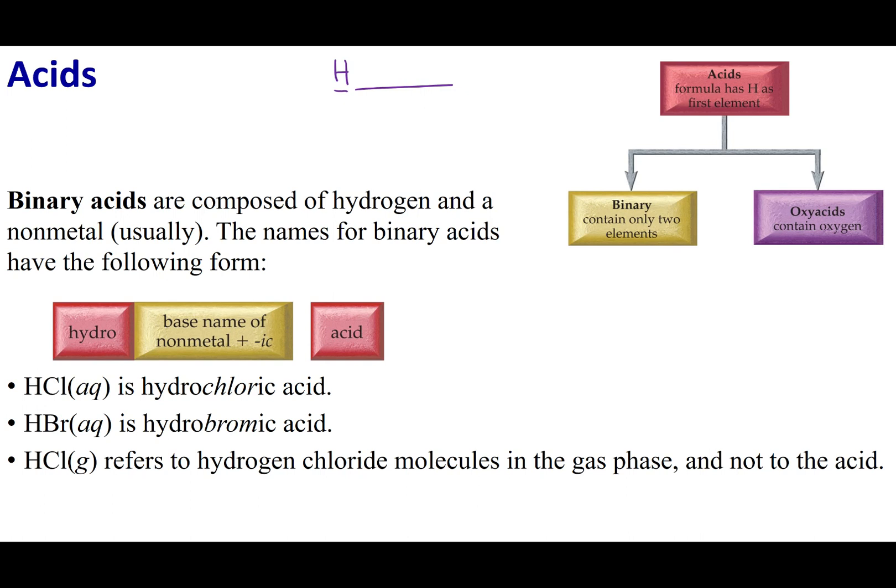The first thing we want to do when we start to name acids is classify the acid as a binary acid or an oxyacid. Now, an oxyacid is something that is going to contain oxygen. A lot of people consider a binary acid something that contains only two elements. I'm going to expand this definition and say that a binary acid is going to be H-plus plus an anion, and that anion cannot have oxygen in it. But most of the time, a binary acid is just going to be two things coming together. One is going to be hydrogen, and then an element.